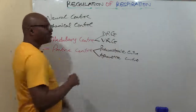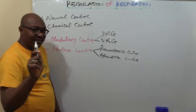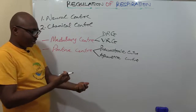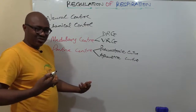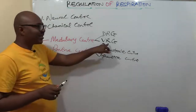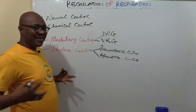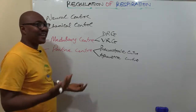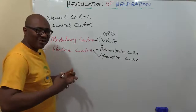The Ventral Respiratory Group (VRG) is in charge of expiration. However, expiration is a passive process — like stretching a rubber band, you don't need force to make it go back; the elastic recoil returns it. So during normal quiet breathing, the VRG is not active and expiratory muscles do not contract. But during forced expiration — for example, during exercise or a respiratory problem requiring labored breathing — the VRG fires and contracts the expiratory muscles.